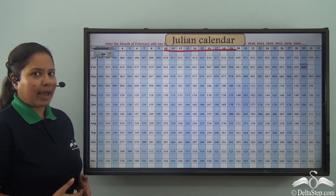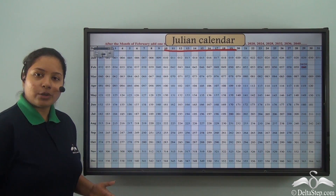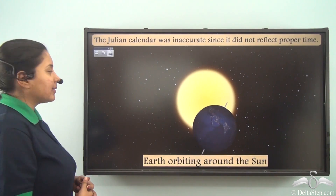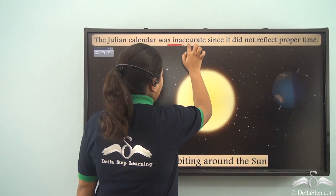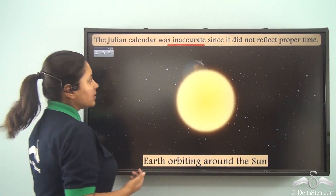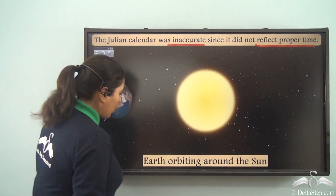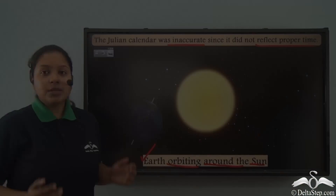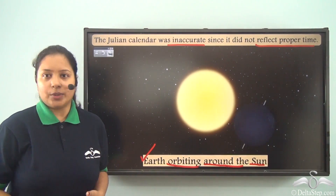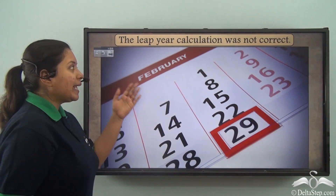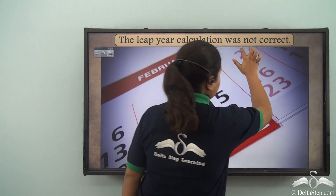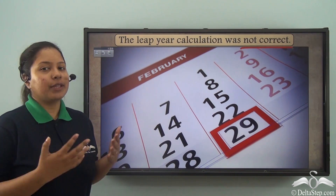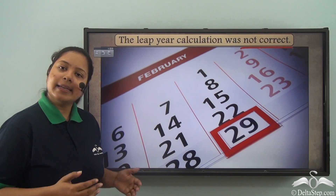Even this calendar had some drawbacks. So let's find out what were they. The Julian calendar was inaccurate because it did not reflect the proper time of the earth orbiting around the sun. The leap year calculation was not correct. We all have heard about leap year, right? But the calculation of the leap year was not correct in the Julian calendar.